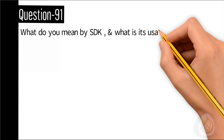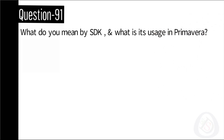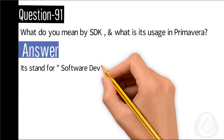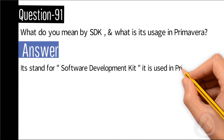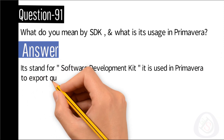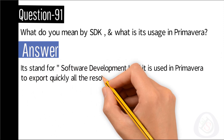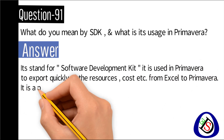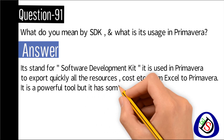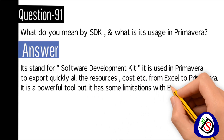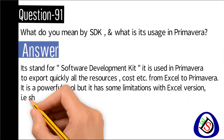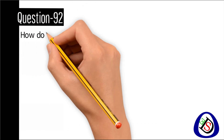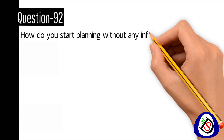Question number 91: What do you mean by SDK and what is its usage in Primavera? Answer: It stands for Software Development Kit. It is used in Primavera to quickly export all resources, cost, etc. from Excel to Primavera. It is a powerful tool but it has some limitations with Excel version — 32 and 64 bit.